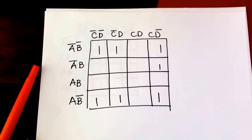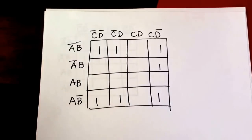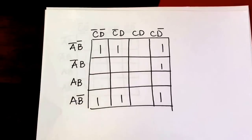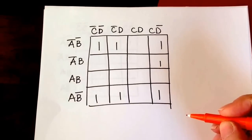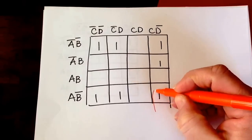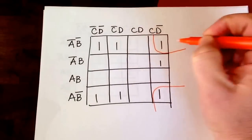I'm going to start with another K-mapping example. In this example, I want to show you a couple of features. I'm looking for the largest groups I can find, and I really don't see any very large groups, but I do see a group of four comprised of the four corners.